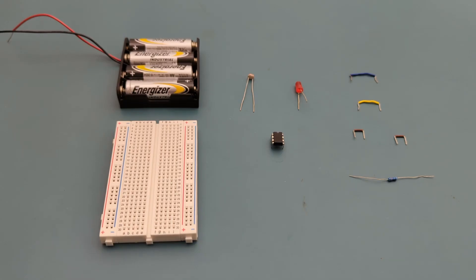Here are all the components you need to set up this circuit. Four jumper wires, one 10,000 ohm resistor, one LDR, one LED, one 555 timer IC, a battery holder with four AA batteries for the power source, and a breadboard to connect everything together.